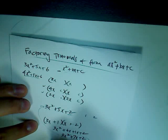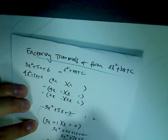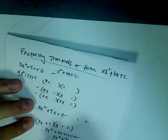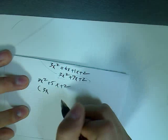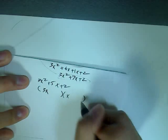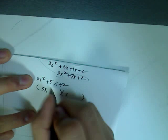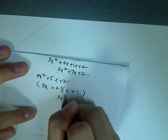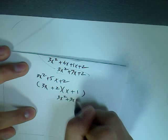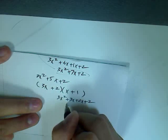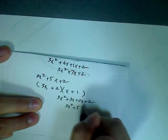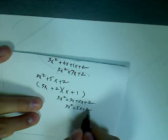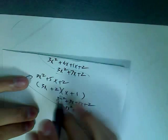Let me rewrite it. The original equation was 3x squared plus 5x plus 2, with a 3x and an x. This time, let's try putting the 2 with the 3x term and the 1 with the x term. When you expand it out, it becomes 3x squared plus 3x plus 2x plus 2, which simplifies to 3x squared plus 5x plus 2. This equals the original equation.